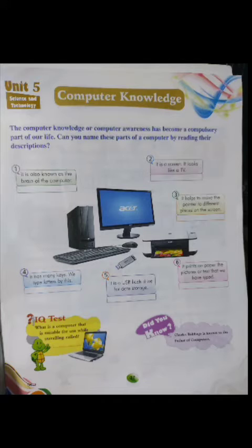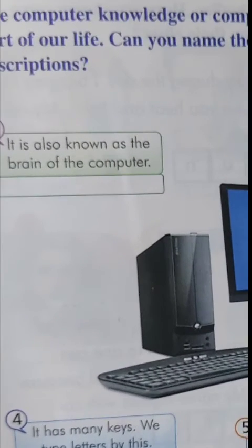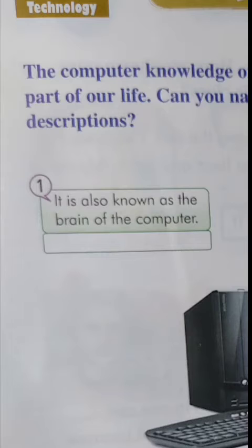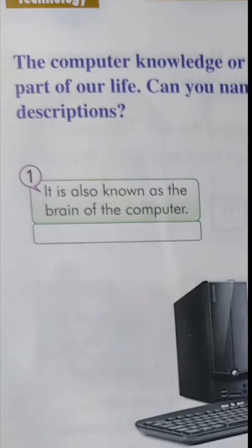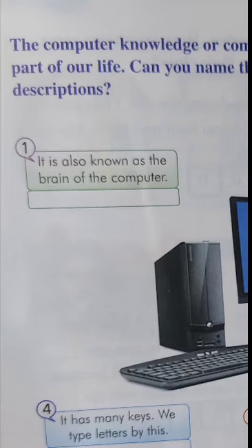Next we will learn about page number 37, Computer Knowledge. You all know what a computer does, the names of its parts, and their functions. Here we will learn a few definitions and functions. Number one is also known as the brain of a computer - that is the CPU, or Central Processing Unit. You have to write CPU here.